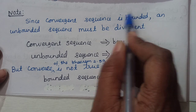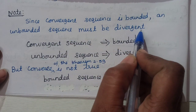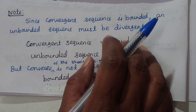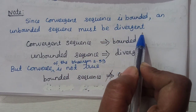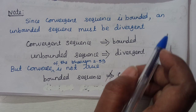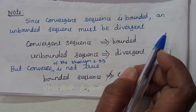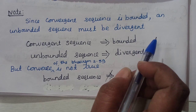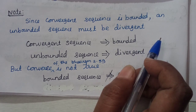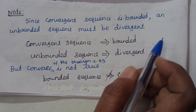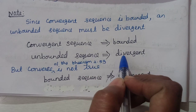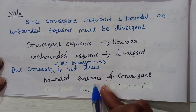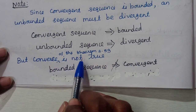If there is an unbounded sequence, then we cannot say it is divergent. Similarly, if there is a convergent sequence, we can say it is bounded, but bounded does not imply convergent. The converse of the theorem is not true.